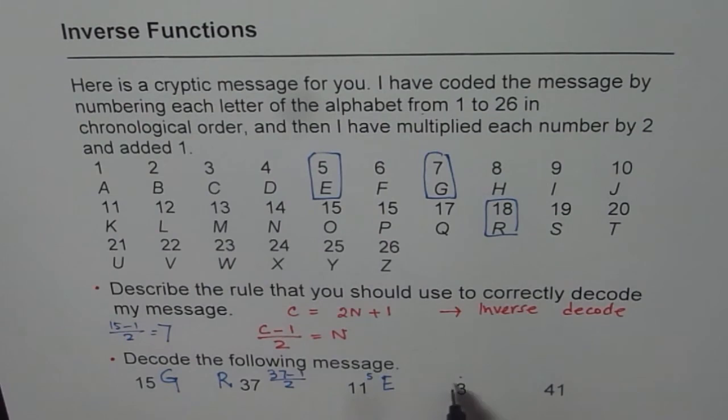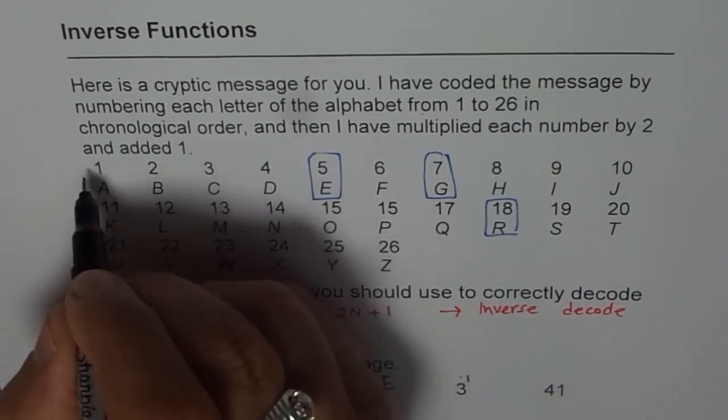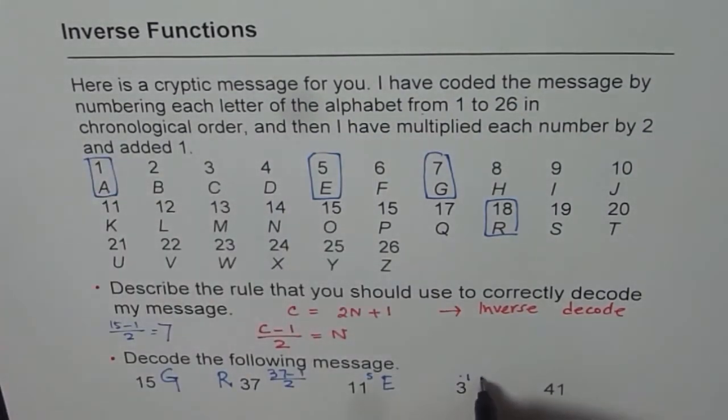3. 1 less than 3 is 2. 2 divided by 2 is 1. That gives us letter A.